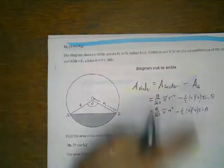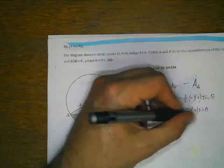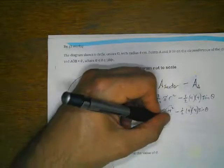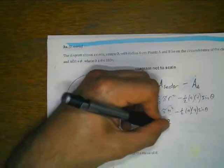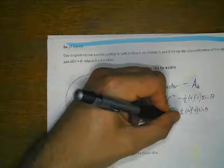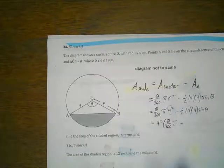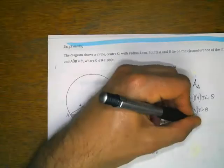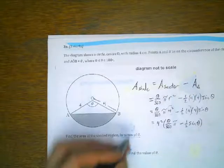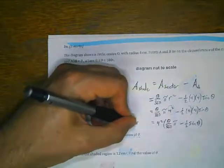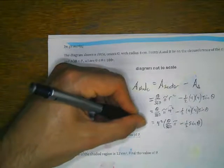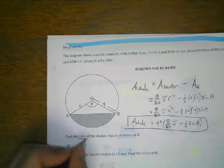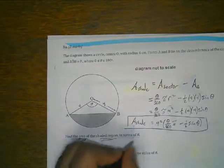We've got 4² here and 4² here, so we can factor out 4² (which is 16). This gives us 16 × (theta/360 × π − ½ sinθ). And that is our formula for the area of the shaded region in terms of theta.